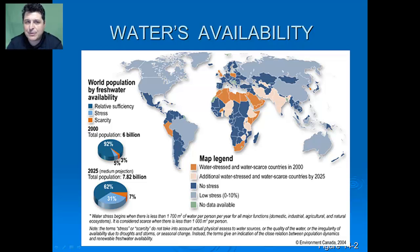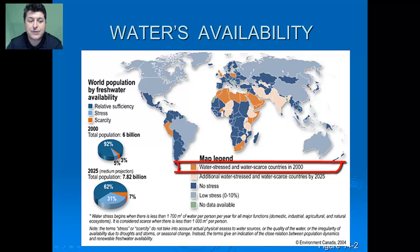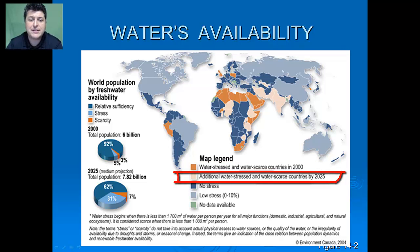These concepts of stress or scarcity don't take into account the quality of water, the access to water, or the irregularity of availability due to droughts, storms, or seasonal changes. They just give us an idea of how much water is available relative to population. On the map, those in brown are areas already stressed in 2000, and by 2025, those in peach will be water stressed or scarce.